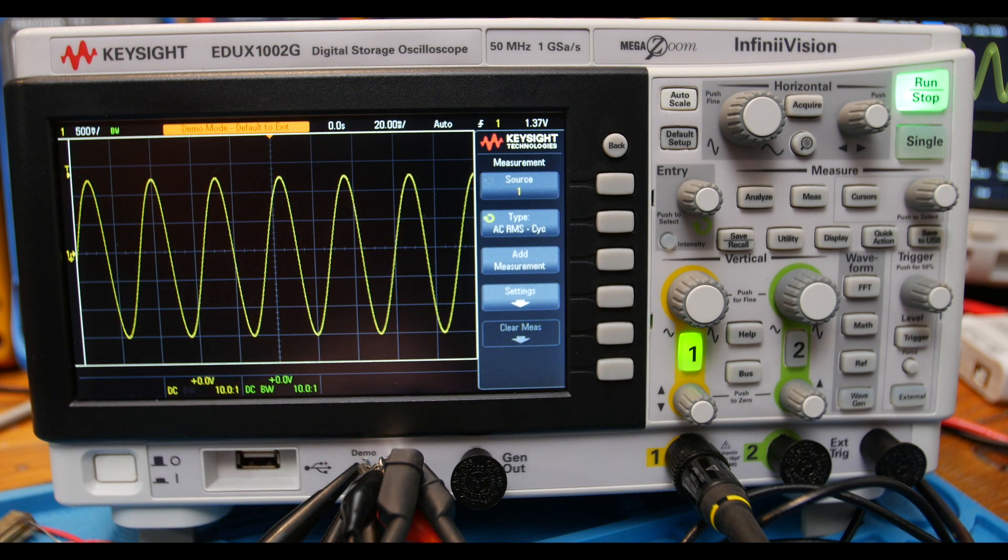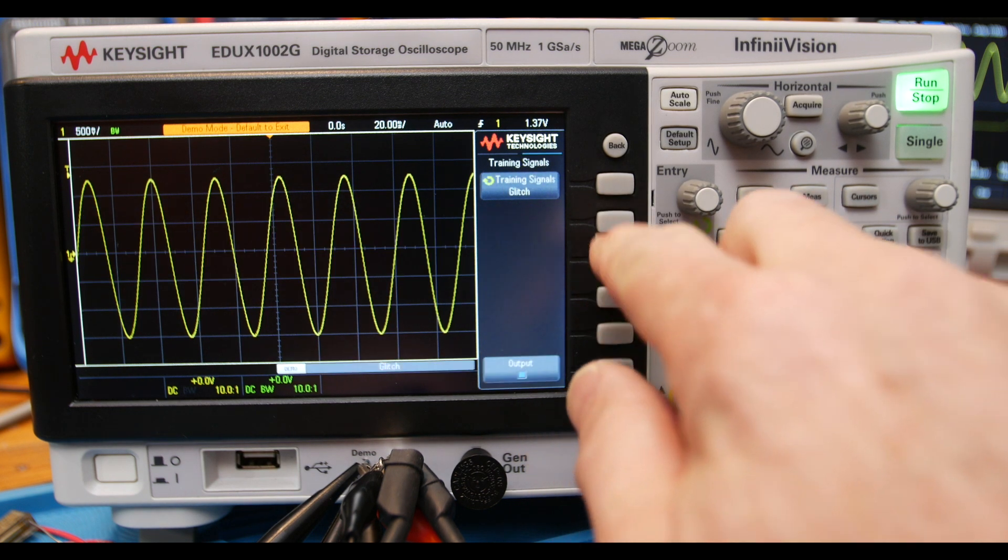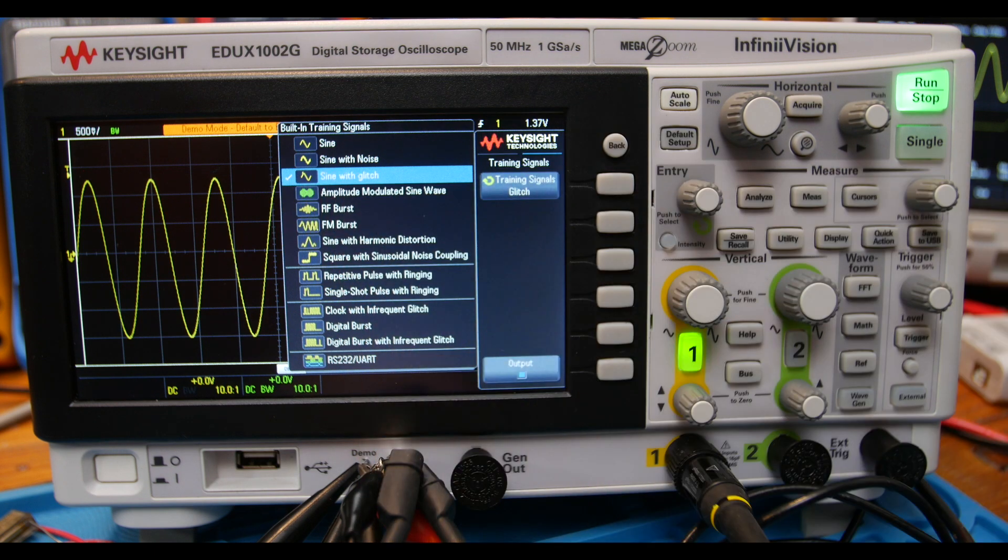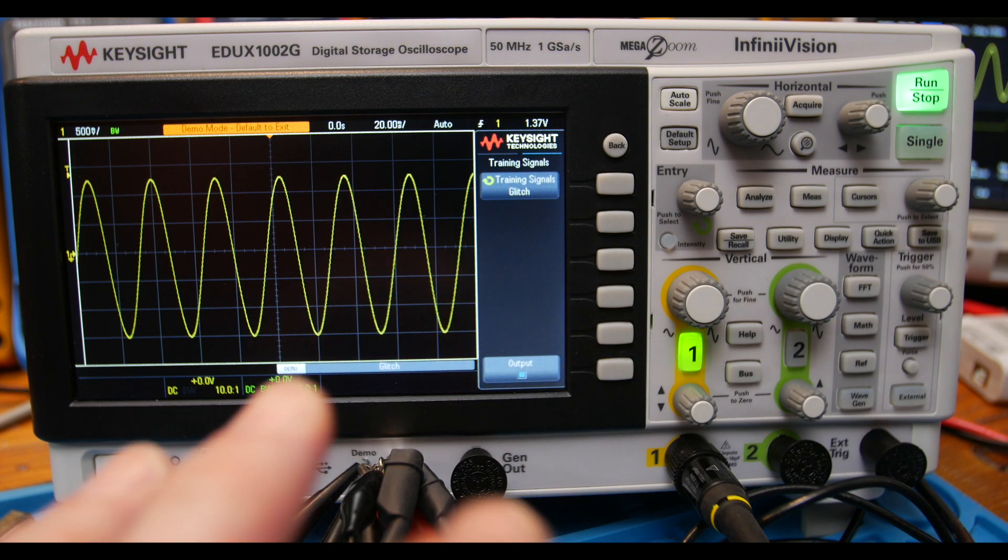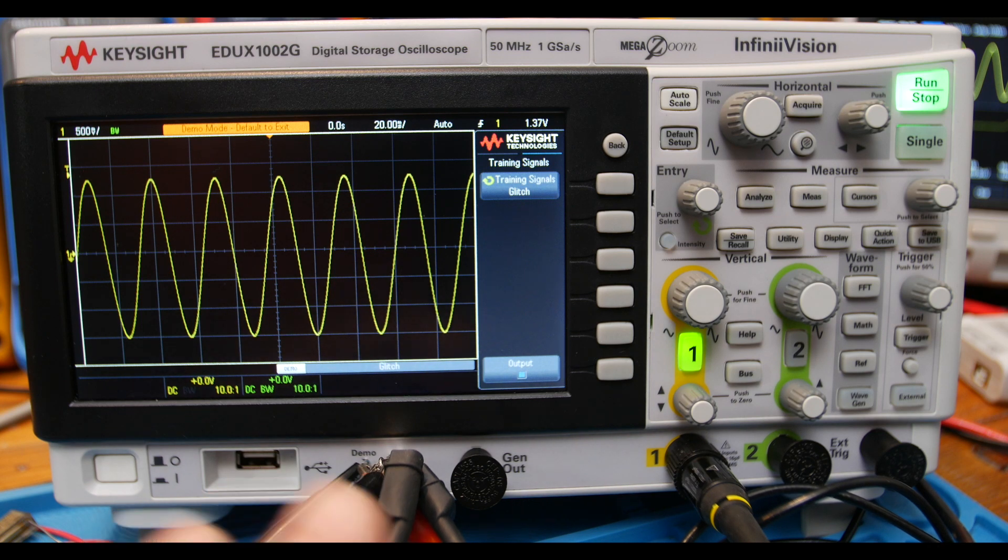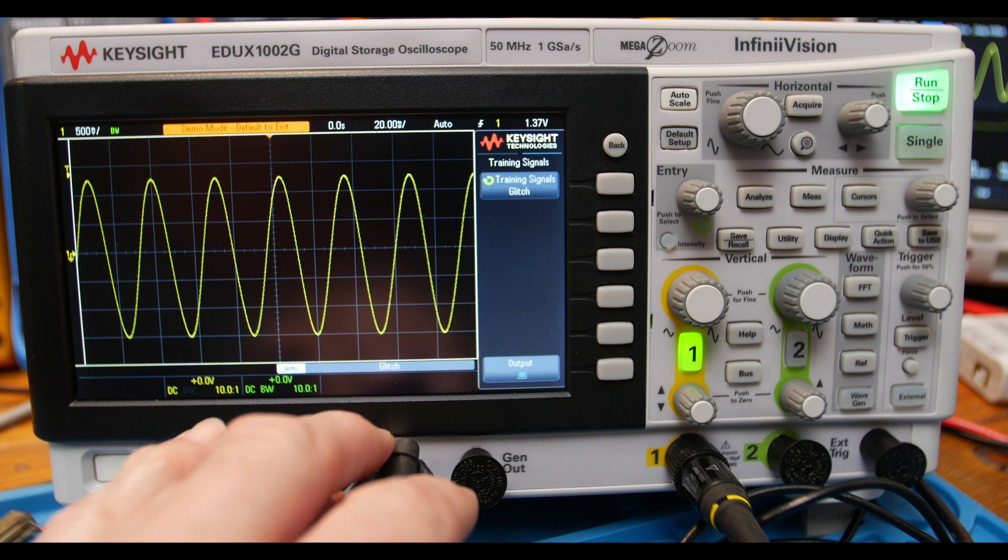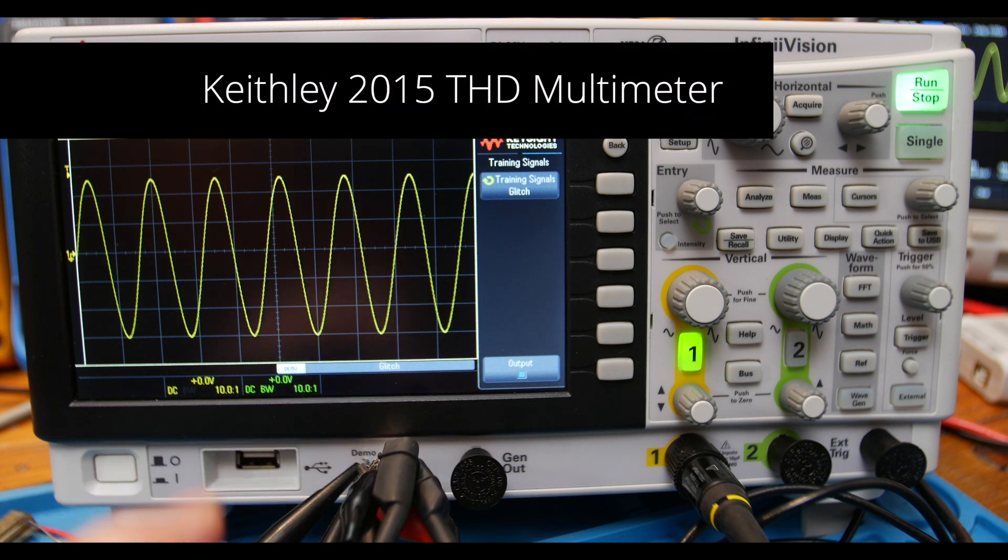Really cool that it comes with all these training signals - training glitch. We're gonna look at this training glitch for this deep memory example. We're gonna start with the GWN stack and work our way back to this scope. We got everything tied here. We also have a Keithley tied in here.